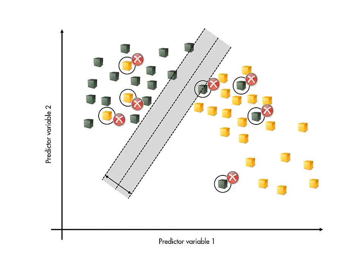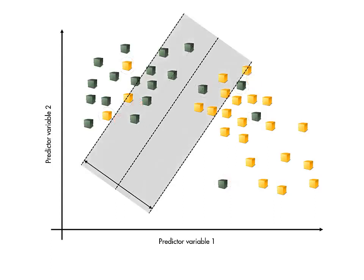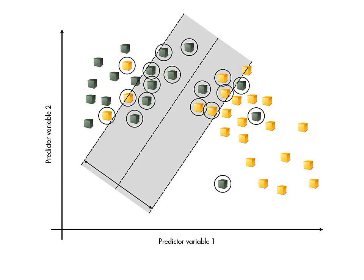Note that observations are correctly classified only if they lie on the correct side of the margin. So the penalty term prevents a solution that cheats by having a huge margin.